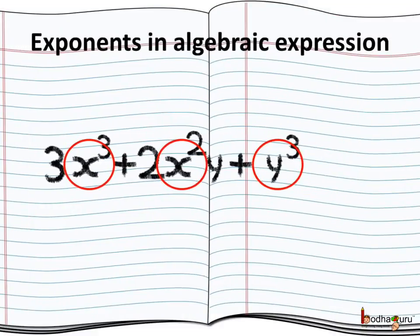We may find many polynomial expressions having variables with exponents. For example, 3x³ + 2x²y + y³. The first term has x cubed, the second term has x squared, and the third term has y cubed.